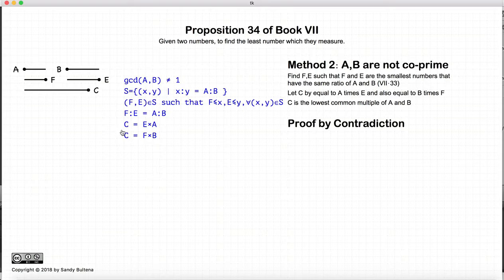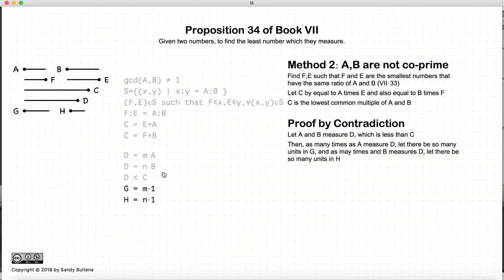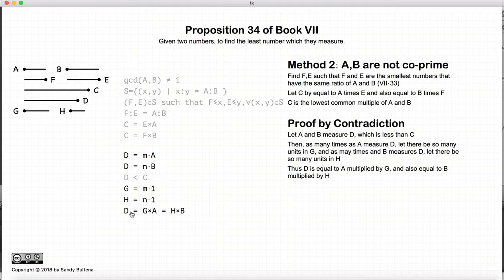Now we're going to prove that c is the lowest common multiple by contradiction. Let us assume that there is a number d, again measured by a and also measured by b, where d is less than c. As many units as a measures d, let that be the number g — in other words, g equals m, and h equals n. Thus d equals g times a, and it's also equal to h times b.